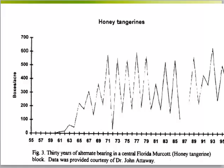This graph here shows honey tangerine yields in boxes per acre for almost 40 years. We can see very large fluctuations in yields over this period. Worldwide, alternate bearing results in at least hundreds of millions, if not billions, of dollars in lost income.